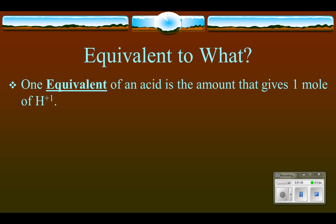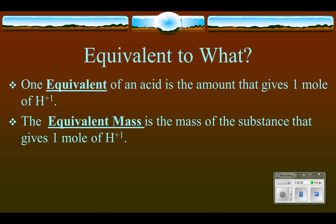We're going to learn some new units. The equivalent is defined as the amount of an acid that gives one mole of hydrogen ions. The equivalent mass is the mass of that substance that will give one mole of hydrogen ions. This is very similar to the mole and molar mass definitions, except we are talking about the amount of hydrogen ions produced.